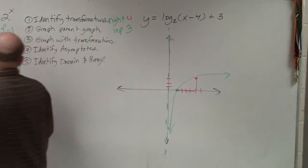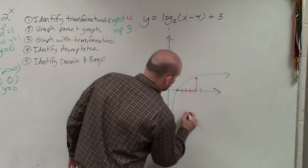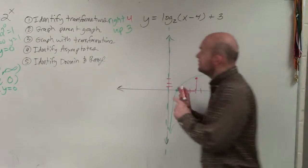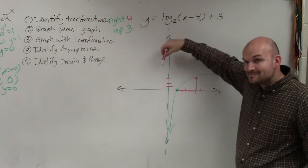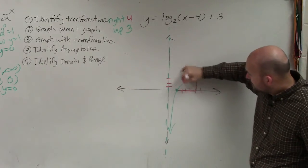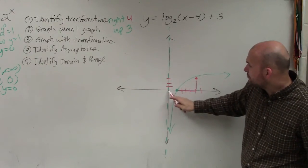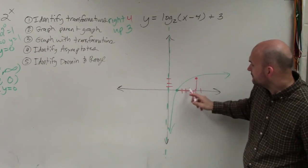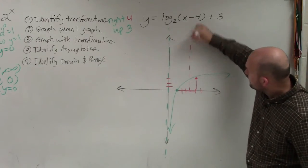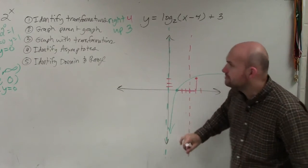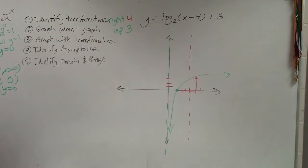OK? So now, we can just go ahead and graph that. And the other thing is, since I moved it to the right 4, remember my asymptote has to be moved as well. So my asymptote is at 0, so I'm going to move my asymptote to 1, 2, 3, 4. Now, it's important that we have to move the asymptote, because that's what our graph approaches.